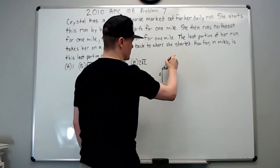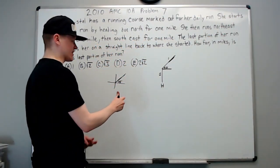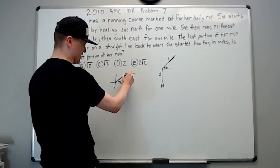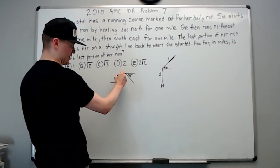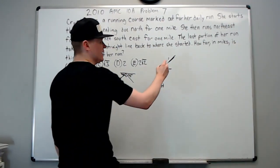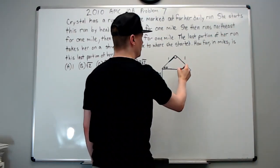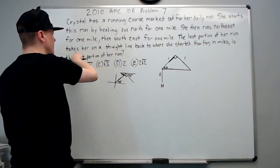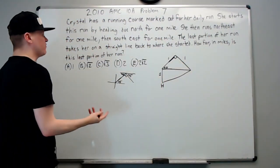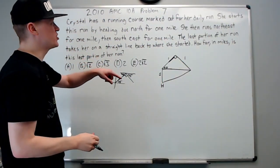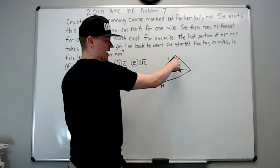She's going 45 degrees that way for one mile. Then southeast for one mile. Again, you have to understand southeast as going at 45 degrees here. These are parallel lines, so this is 45, this is 45, this is going to be 90, so you're just going to come down at 90 degrees. The last portion of her run takes her on a straight line back to where she started. How far in miles is this last portion of her run?